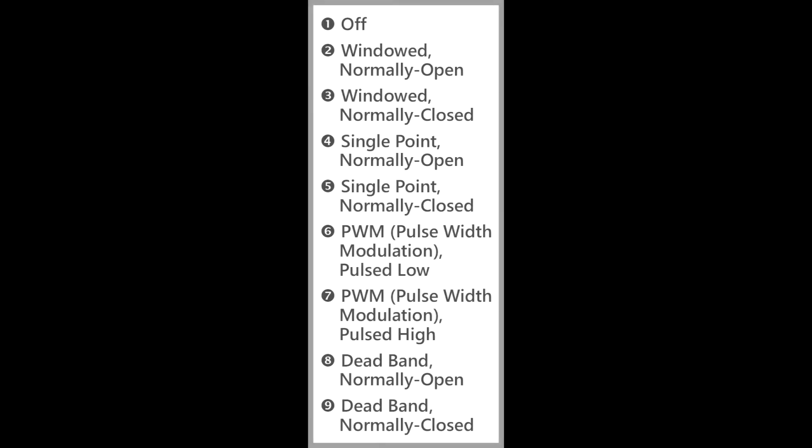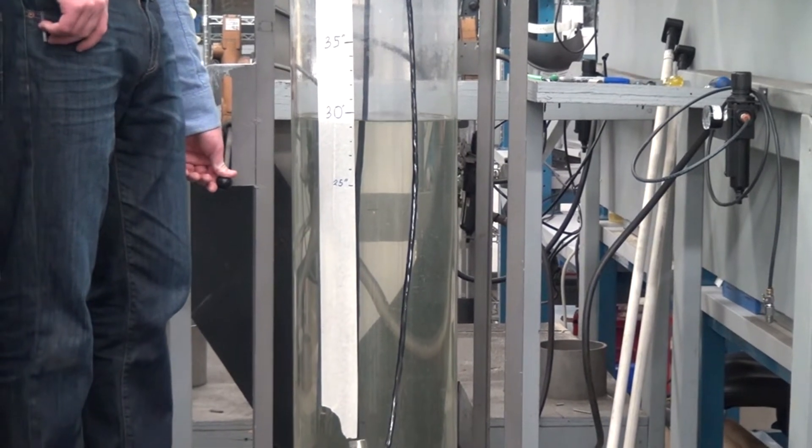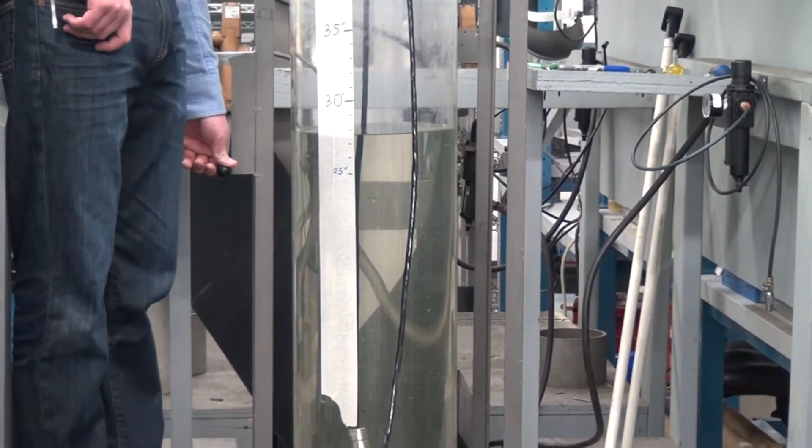Also built into the 815LT is a switch output. The switch output gives you a built-in switch to either control the level or monitor the level by sending an alarm if the level gets too high or too low.